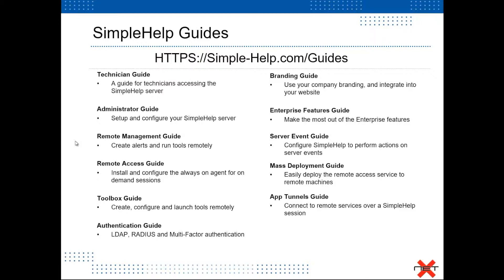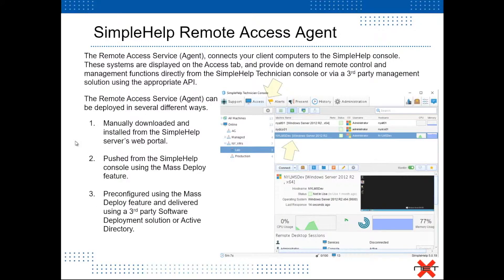This is the guide that talks about the deployment of your remote access service or remote access agent. The remote access agent is what connects your client computer to your Simple Help console. This agent allows your machines to be remote controlled on demand, and these machines are then accessible via the access tab. You also have the ability to deploy these agents using the support portal for manual download and installation, and you can specify specific command line options to point to the server.